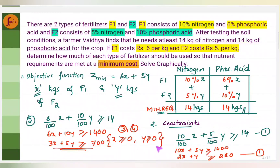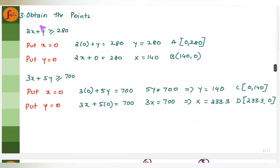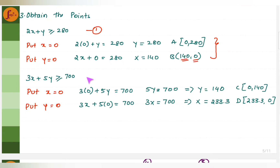The third step is to obtain the points. For the first constraint, put x = 0 to get y = 280 (point A: 0, 280), and put y = 0 to get x = 140 (point B: 140, 0). For the second constraint, do the same to get points C and D. We now have two sets of points for both constraints.